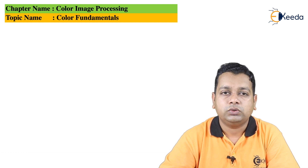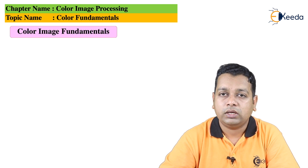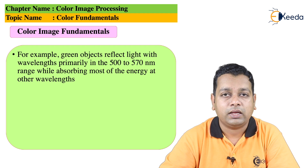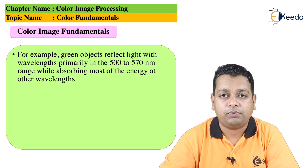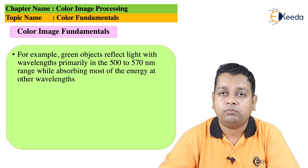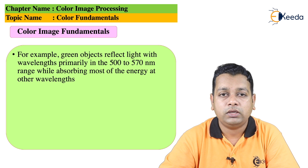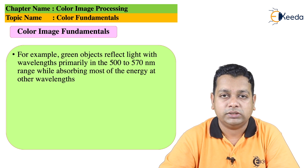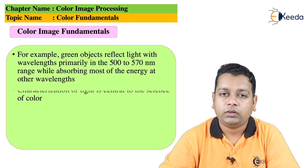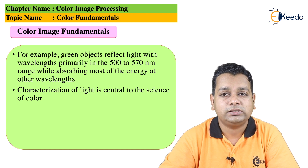For example, green objects reflect light with wavelengths primarily between 500 to 570 nanometers while absorbing most energy at other wavelengths. Characterization of light is central to the science of color.